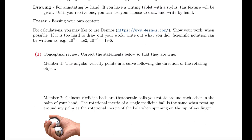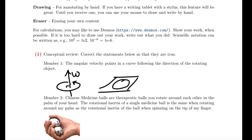Correct the statements so they are true. 'Angular velocity points in a curve following the direction of a rotating object' — wrong. Angular velocity is a vector that points perpendicular to the rotation. If the object is rotating like I've drawn, the angular velocity points perpendicular to the plane that circle resides within — if the entire rotation is on this sheet of paper, then omega points perpendicular to that sheet. Whether omega points up or down depends on the right-hand rule: your thumb goes along omega and your fingers curl in the direction of rotation.